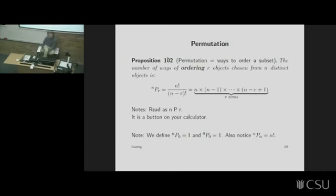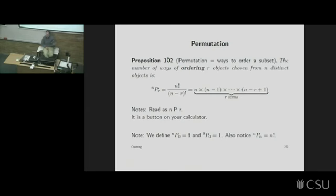Sometimes you want to order only some of the things, not every single one — that's called a permutation. There are formulas, but in practice using your calculator is quite sufficient. The notation is nPr: n is the total number of things in the big group, and r is the number of things you want to order. It's a button on your calculator — Casio often calls it NPR, sometimes above the multiply/divide button.